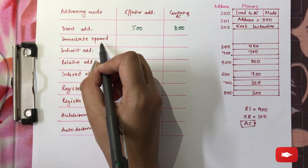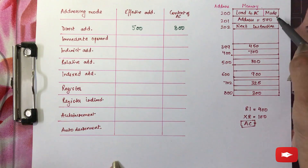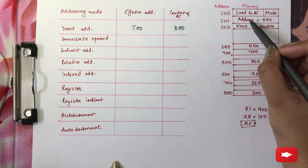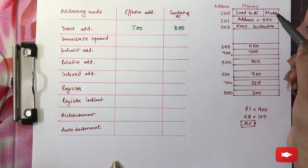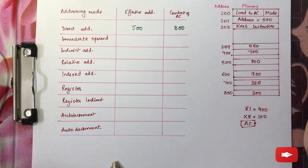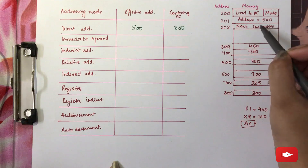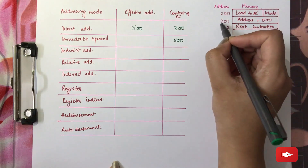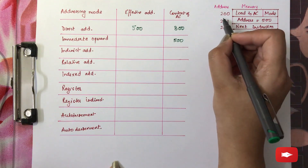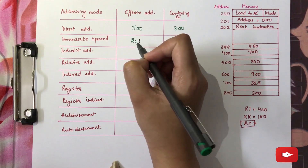Then comes the immediate operand mode. In this mode, the value specified in the address part is not the address — instead it specifies the operand itself. Therefore, your operand is 500, and because it is specified at address 201, your effective address will be 201 in this case.